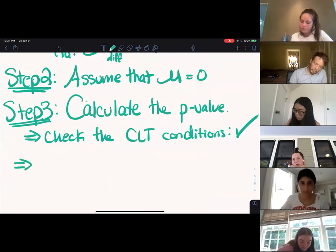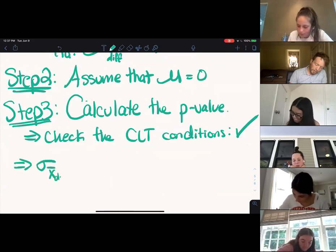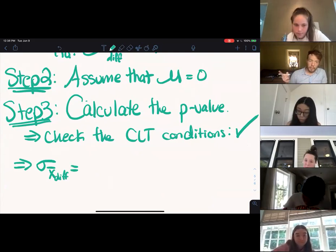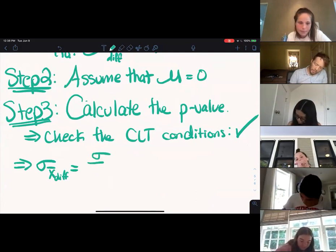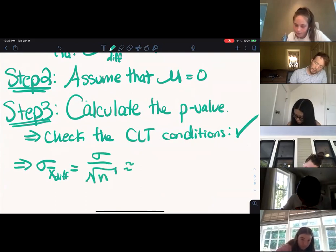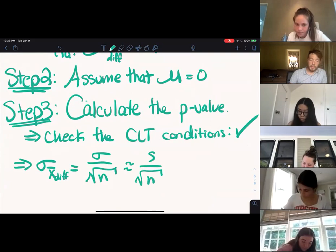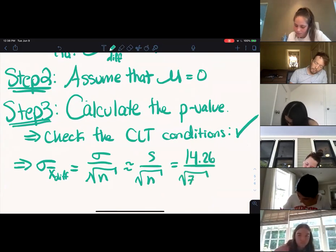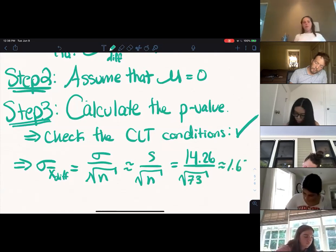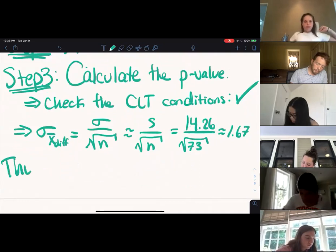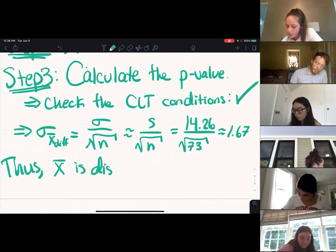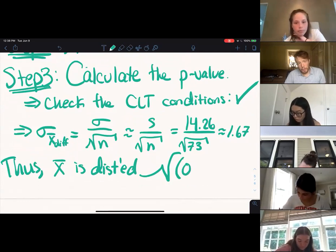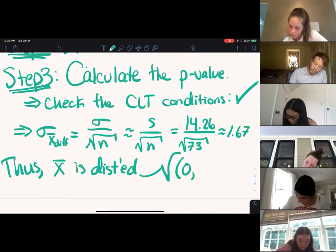The next thing we need is sigma x-bar — the standard deviation of the sampling distribution, or the standard error. Since our sample size is large enough, we can approximate it with the sample standard deviation divided by root n, which in this case is 14.26 over root 73, which is approximately 1.67.